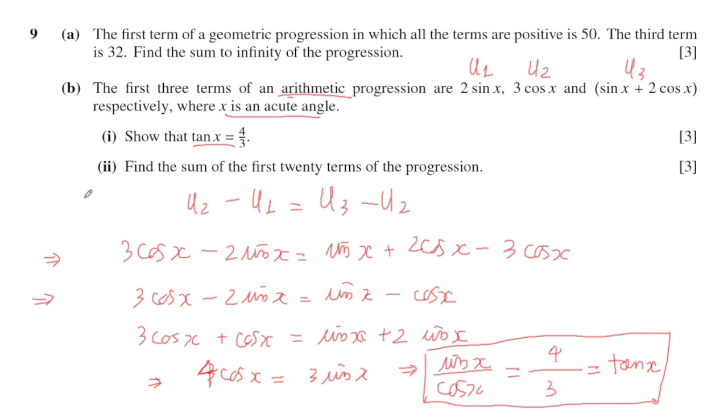Part (ii): Find the sum of the first 20 terms of the progression. For 20 terms, you can use the formula S₂₀ equals 20 divided by 2 times (2u₁ plus d times (20 minus 1)). You know about u₁, but you don't know about d because it is in the form of trigonometric functions.